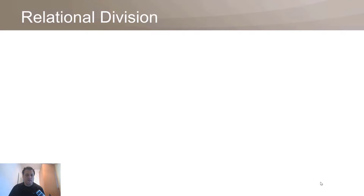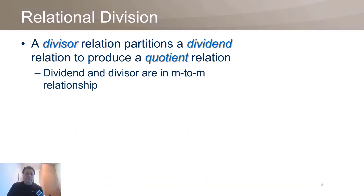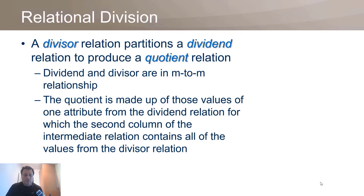I'll start with what is theoretically called relational division — one of the original relational operators defined by Codd. The formal definition: a divisor relation partitions a dividend relation to produce a quotient relation. Dividend and divisor must be in a many-to-many relationship. The quotient is made up of those values of one attribute from the dividend relation for which the second column of the intermediate relation contains all values from the divisor relation.